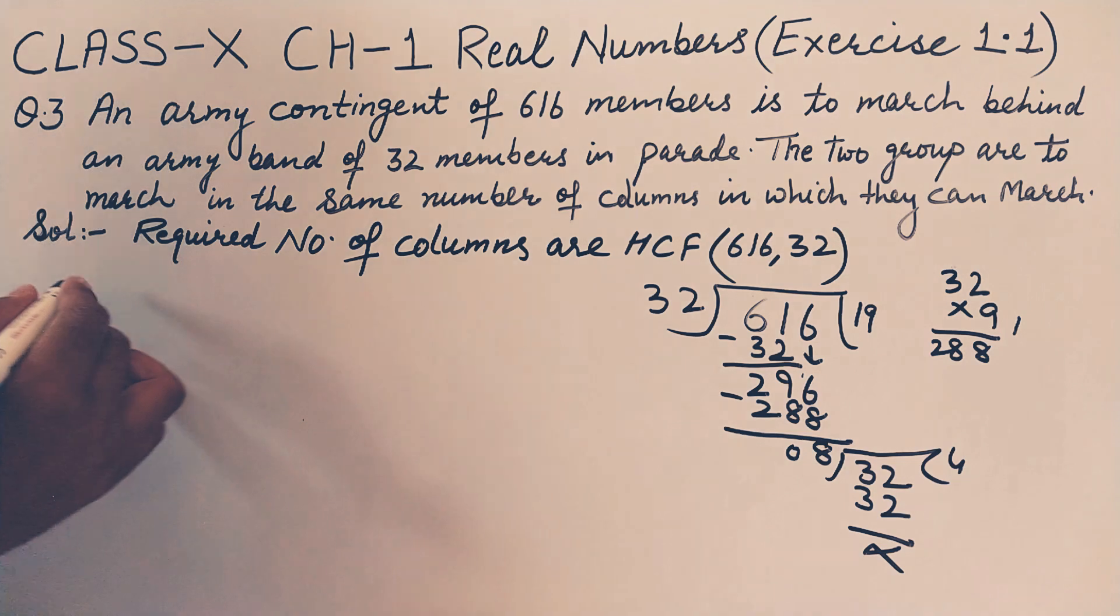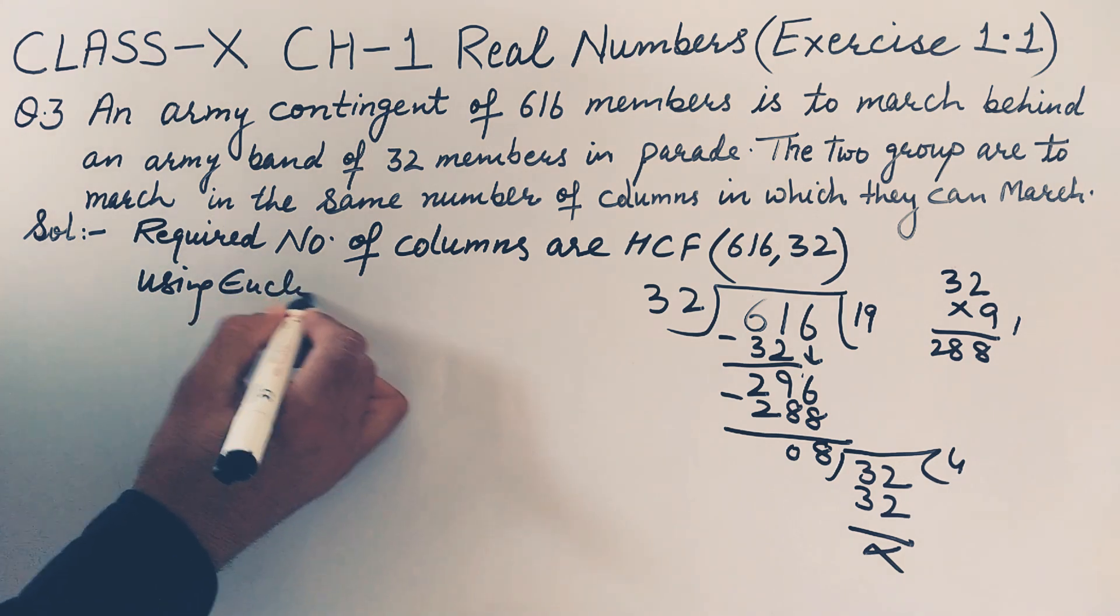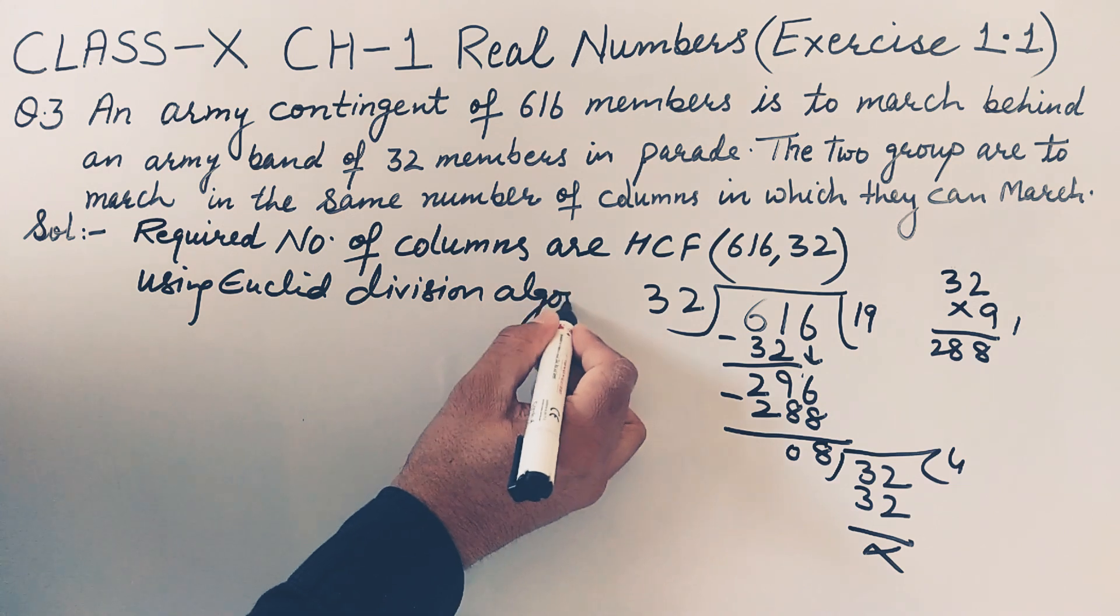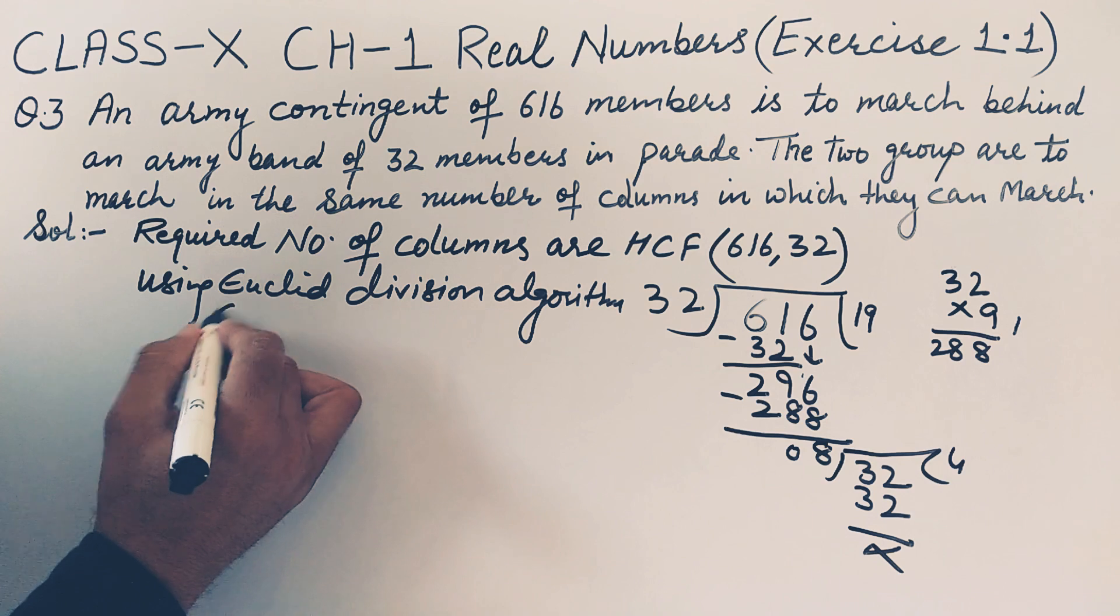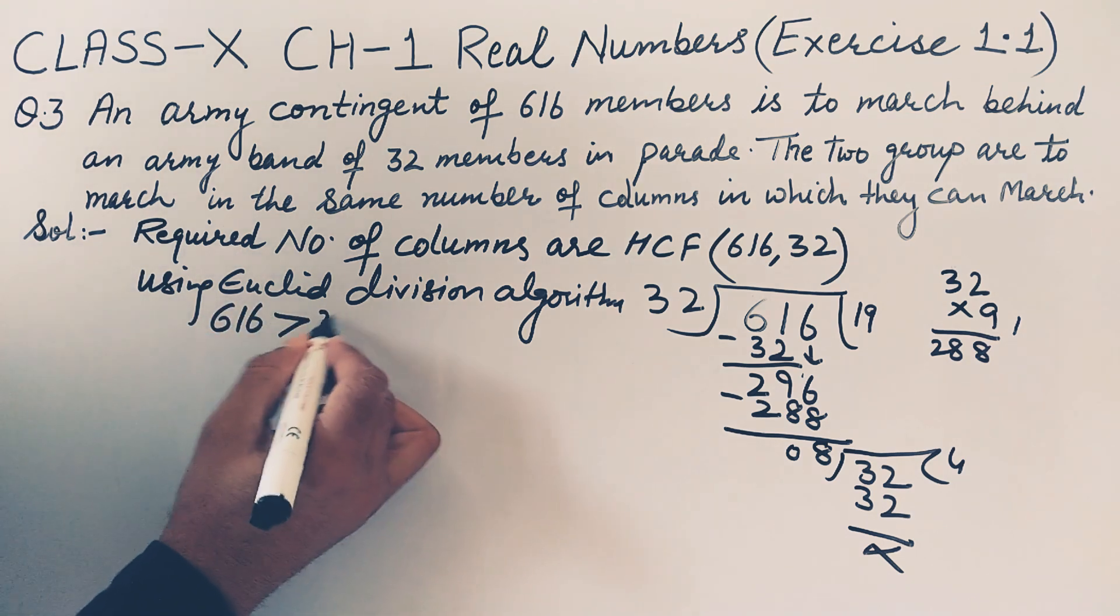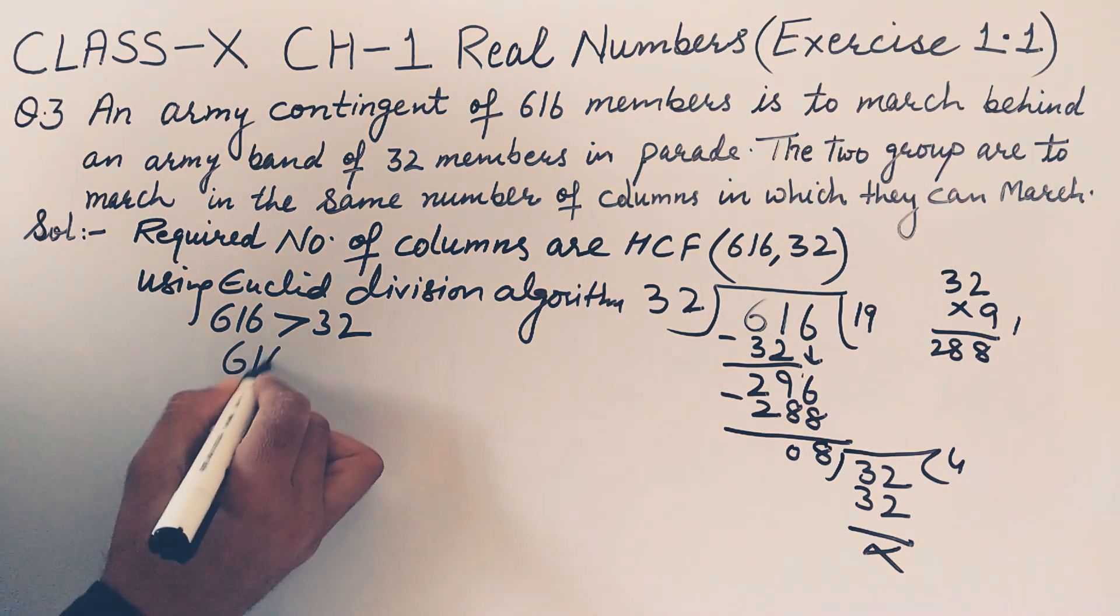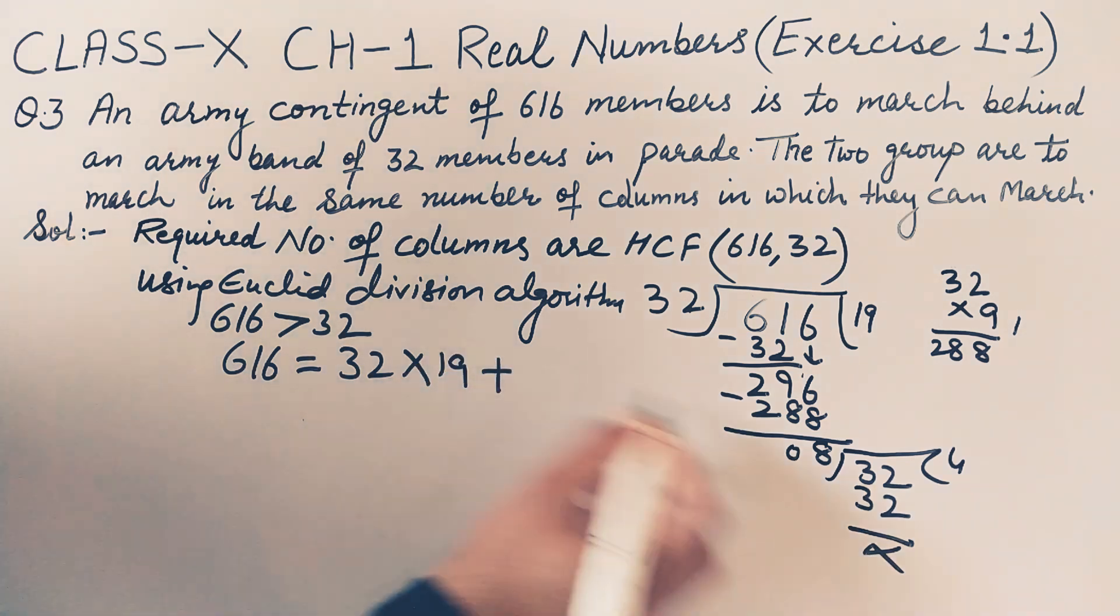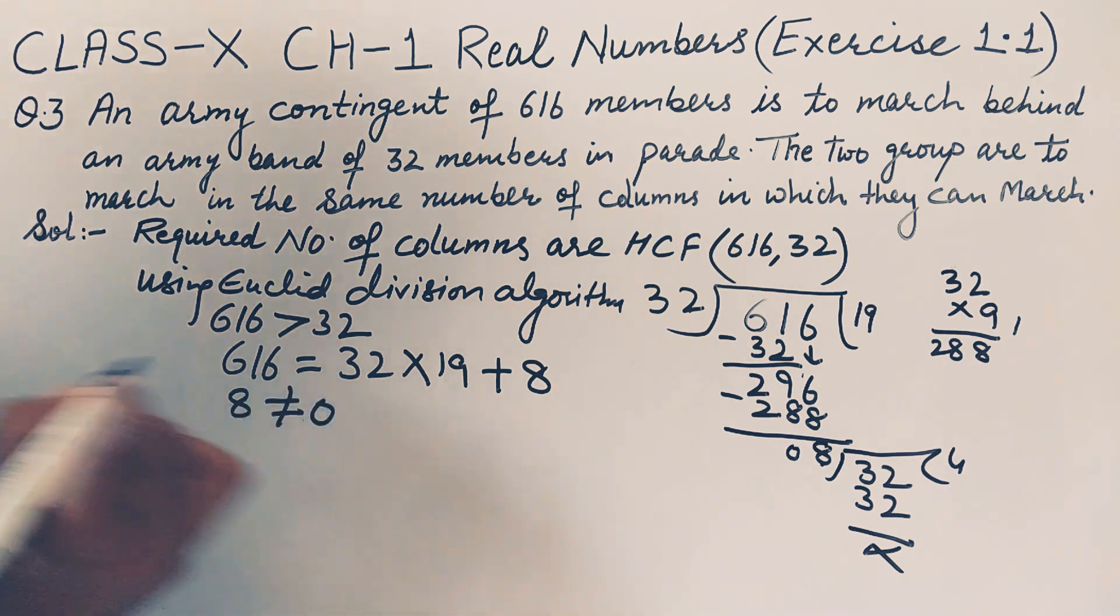But here we have to write using Euclid's division algorithm. So 616 is bigger than 32, apply Euclid's division lemma. Dividend is equal to divisor into quotient, which is 19, plus remainder is 8. Now again remainder is not 0, so we should proceed with this. We'll write 8 does not equal 0 because remainder does not equal 0.